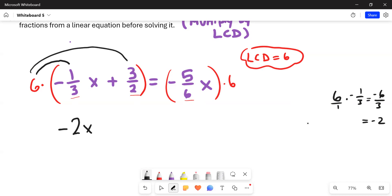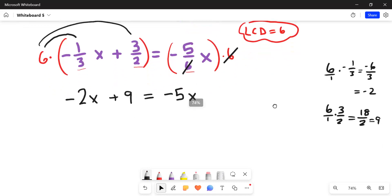And the same thing here. We'll multiply six times three halves. You'll get 18 halves, and two goes into 18 nine times. So you get plus nine. And then on the right hand side, you might just notice that the sixes will simplify with one another, and we're left with just negative five x. Now it's a traditional linear equation with no fractions. That's where it gets this name, clearing fractions.